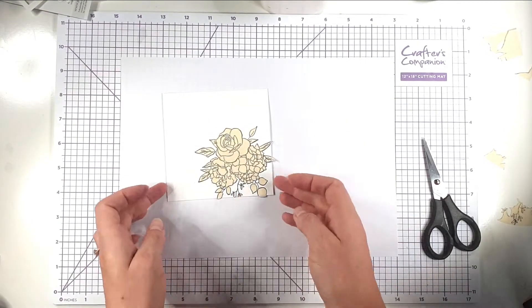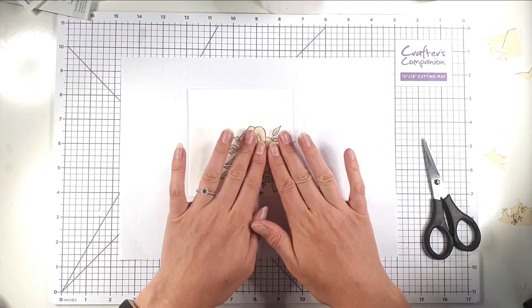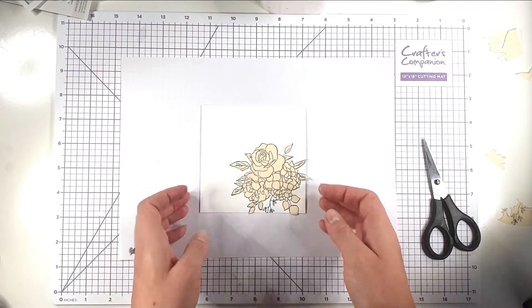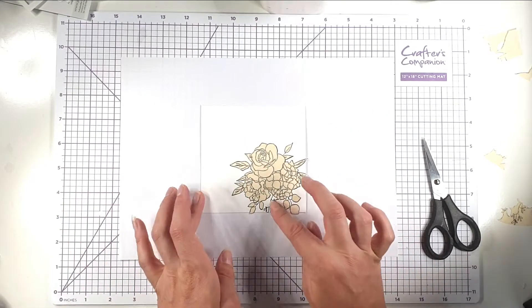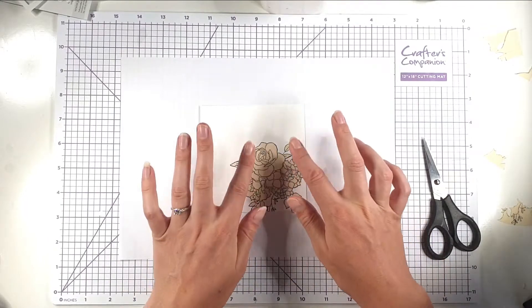So you'll notice I've not masked off these little flowers down here, mainly because I didn't want to cut out those tiny bits, so I'm just going to blend over that, it's going to colour those flowers and then I'll just put some alcohol marker over the top and we'll deal with it.